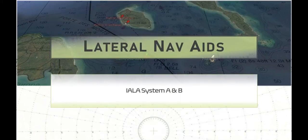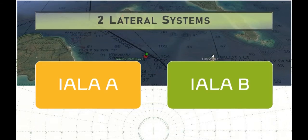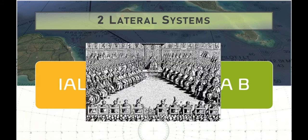Welcome to Oceans Unlimited. This is going to be a quick concept video where we outline the two international lateral aid systems — that's the IALA A and the IALA B. The IALA is another fancy acronym representing a governing body: the International Association of Lighthouse Authorities.